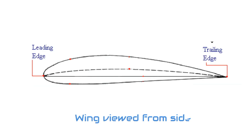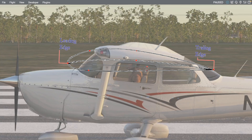When we look at the wings from the side, we can see that the edge of the wing that faces forward is called the leading edge, while the back edge of the wing is called the trailing edge.